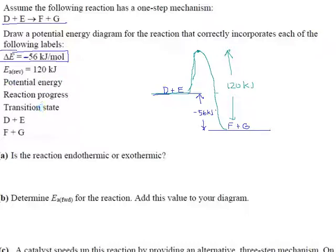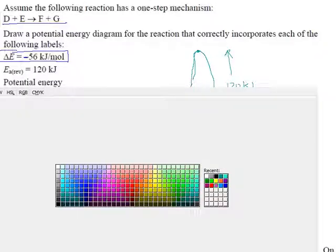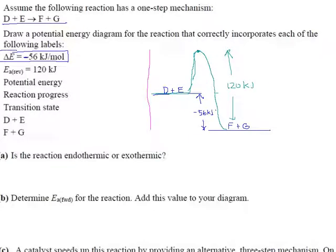Potential energy and reaction progress are just the labels we put on our graph. That part's easy. This is your chemical potential energy. And in this direction is reaction progress. The transition state is the part in between where we've torn apart these molecules and we're ready to make new ones, or where we've torn apart D and E. So right there is the transition state. And we have our reactants DE and our products FG.